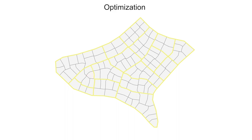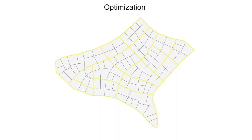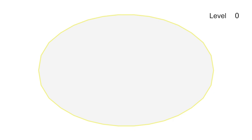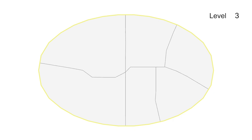After that, we optimize the geometry of the parcels and streets to improve their geometric quality. We show our hierarchical co-generation and geometry optimization process for each result.